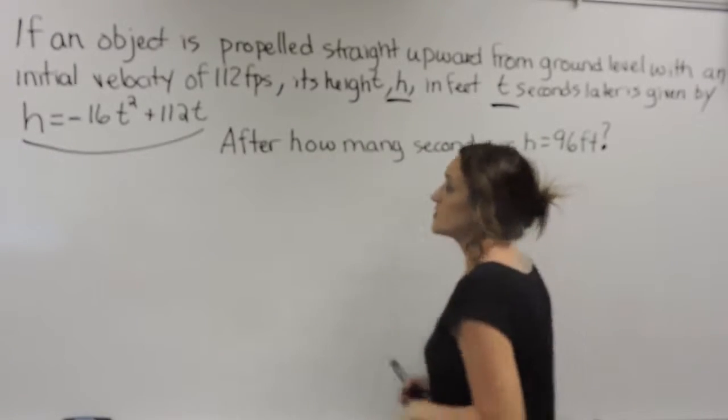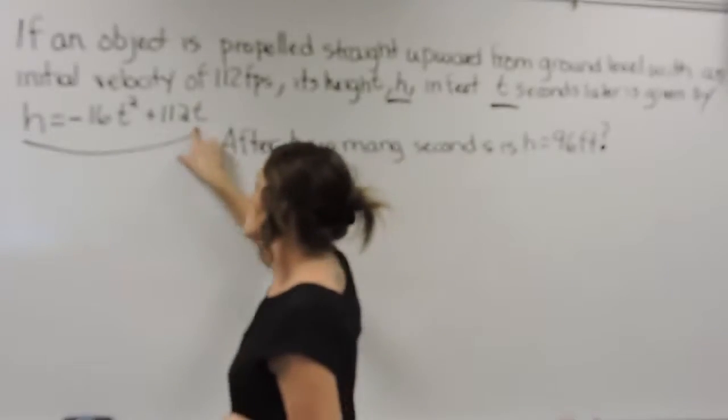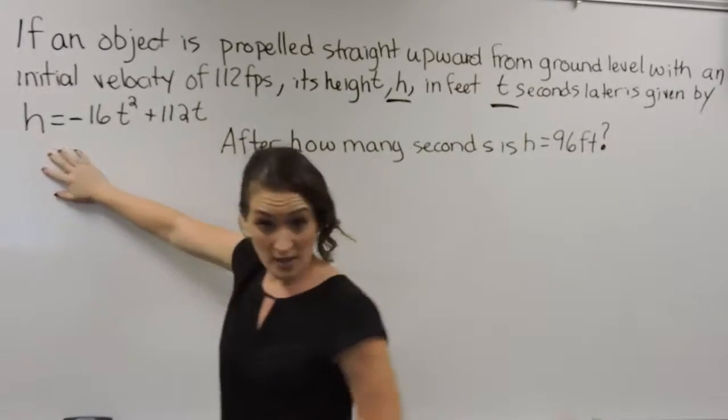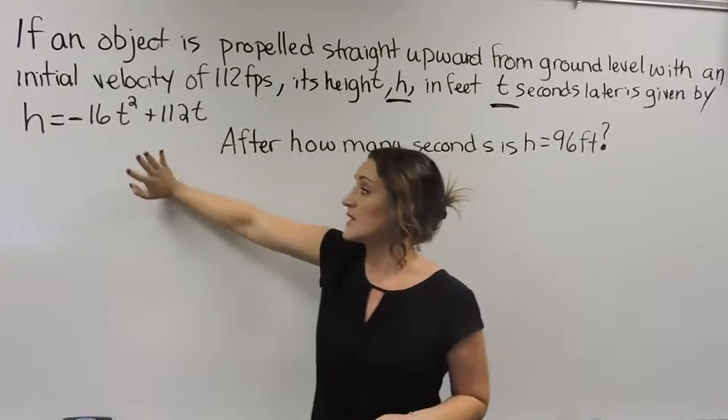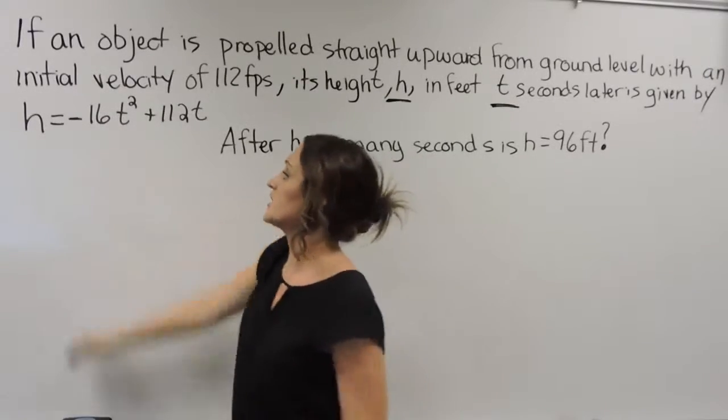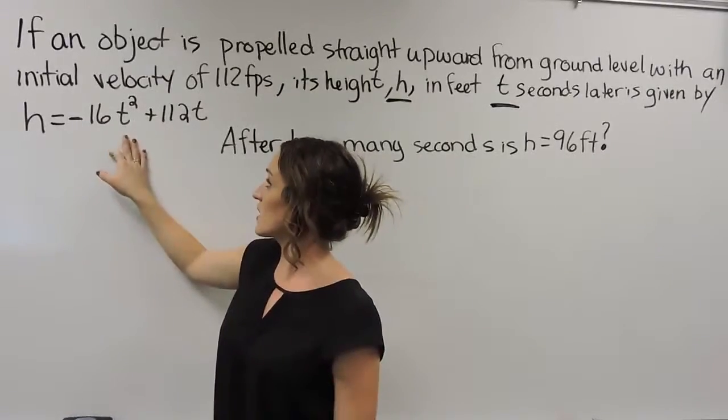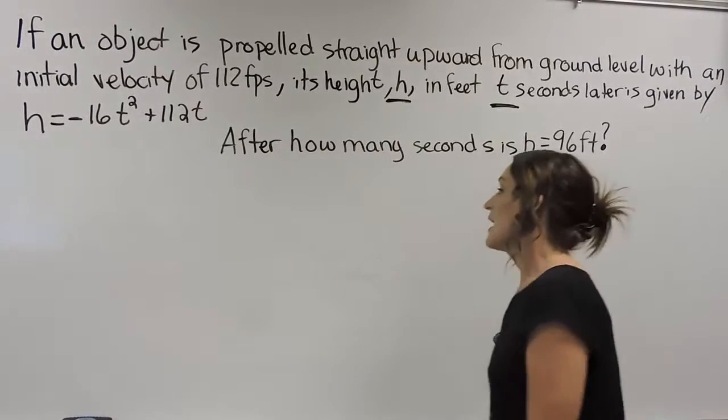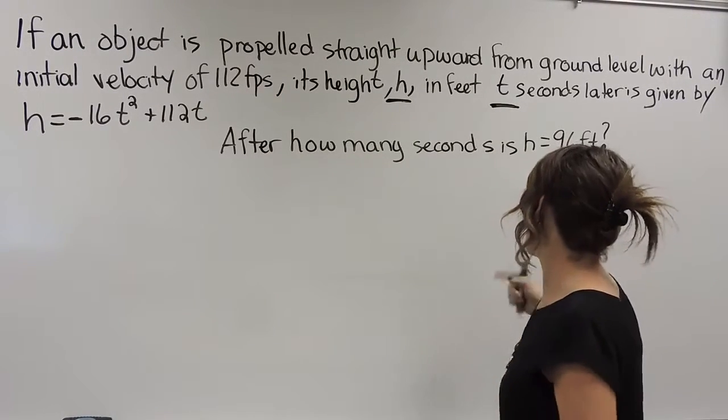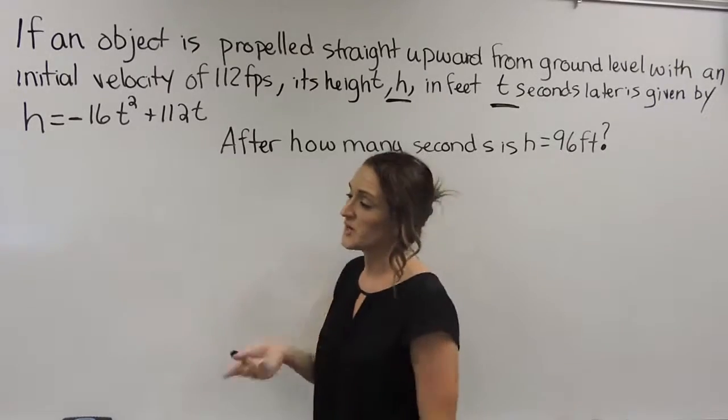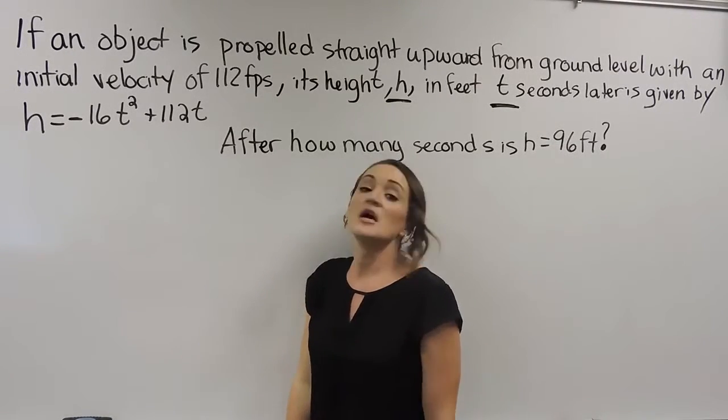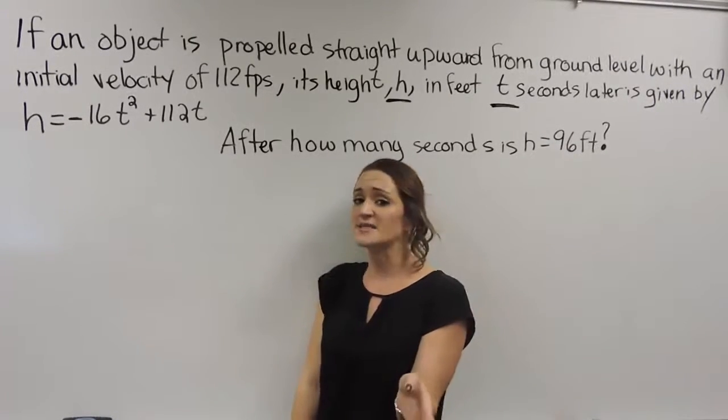So what we need to do with this problem here, well first off we need to start with the equation that they gave us. So here's our equation: h = -16t² + 112t. And it wants us to figure out how long is it going to take it to reach 96 feet. So they gave us the height.